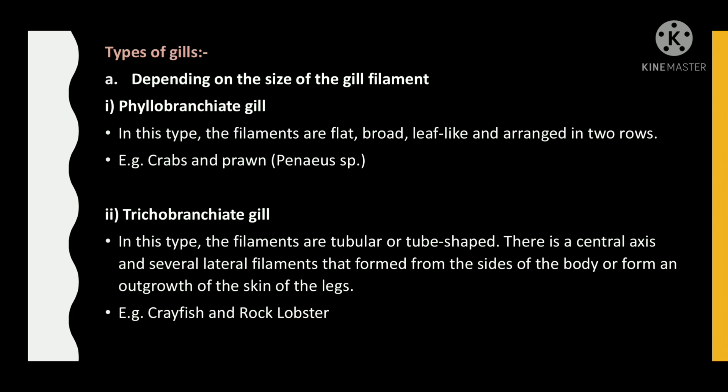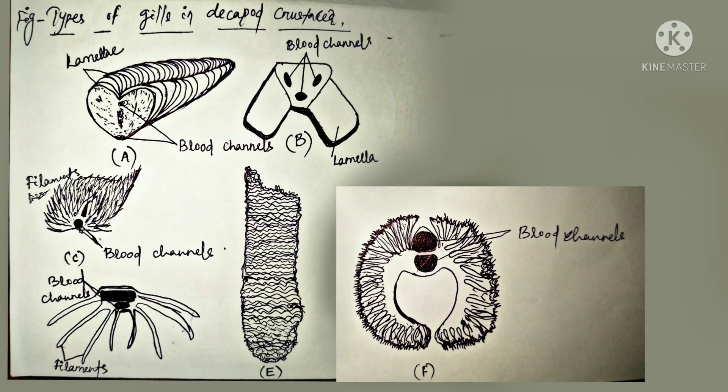Types of gills — depending on the size of the gill filament: Phyllobranchiate gill — in this type, the filaments are flat, broad, leaf-like, and arranged in two rows. For example, crabs and prawn. Trichobranchiate gill — in this type, the filaments are tubular or tube-shaped. There is a central axis and several lateral filaments that form from the sides of the body or form an outgrowth of the skin of the legs. For example, crayfish and rock lobster. This figure shows gills in decapod crustaceans.